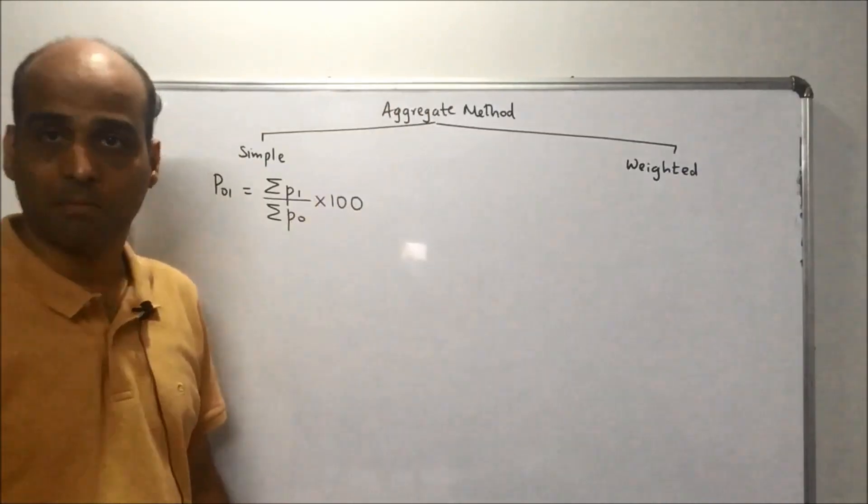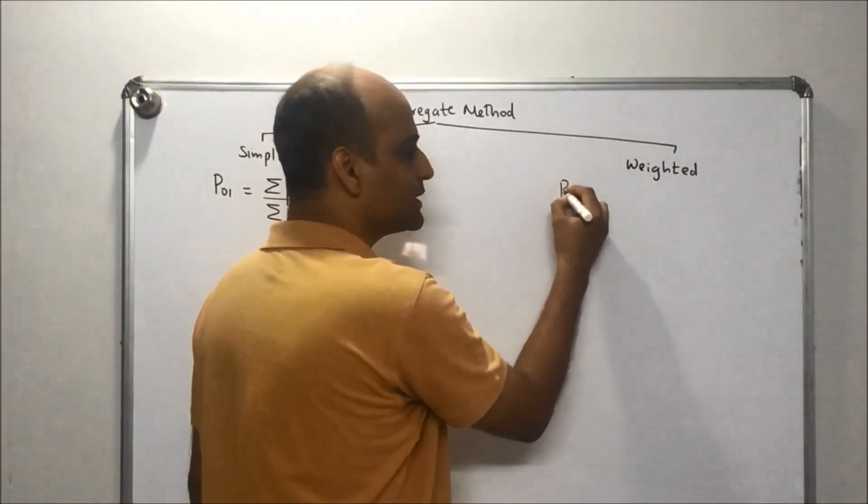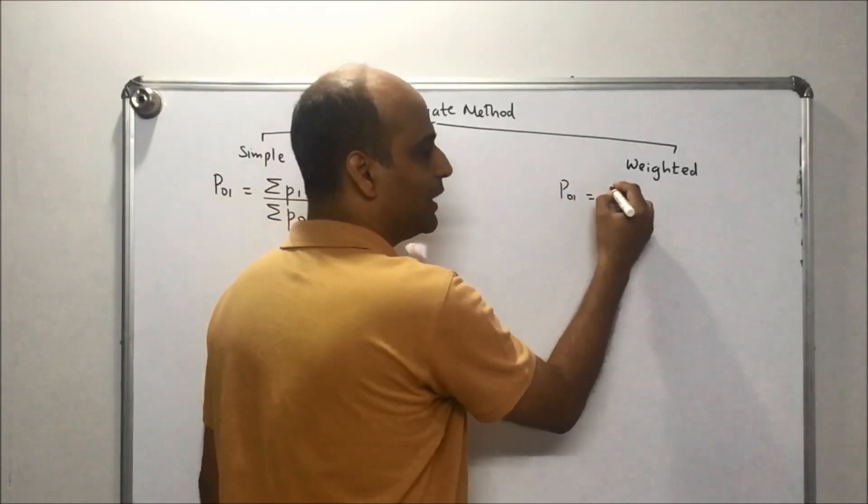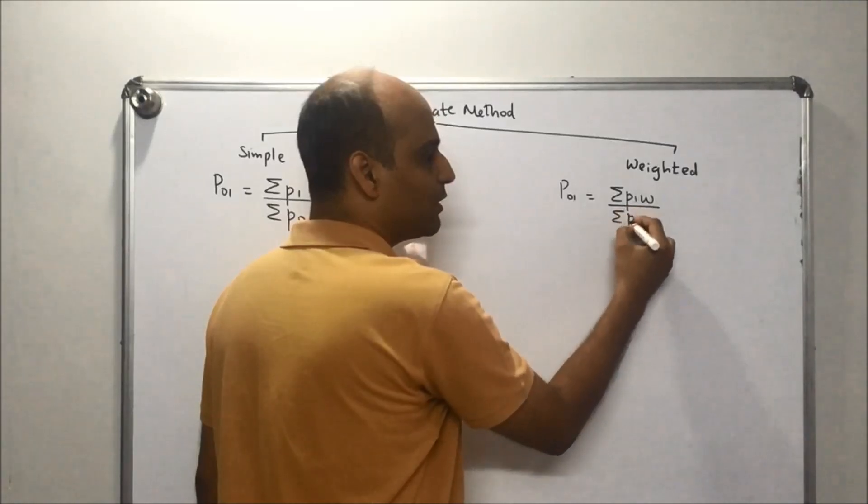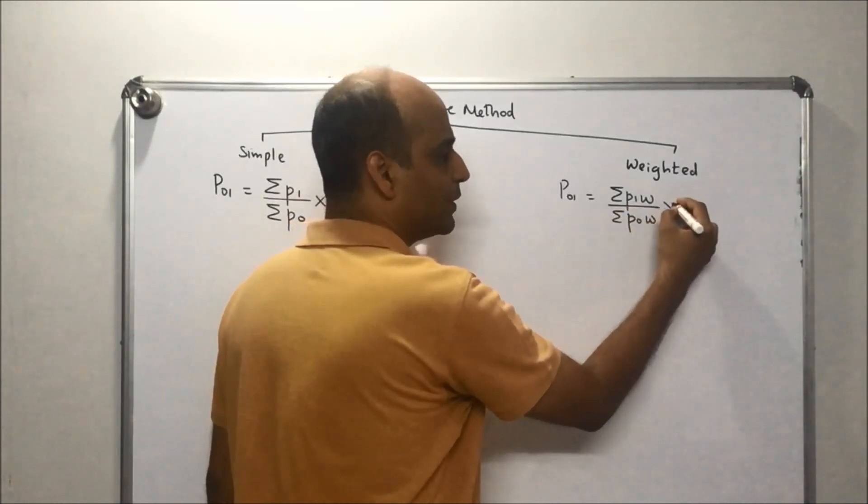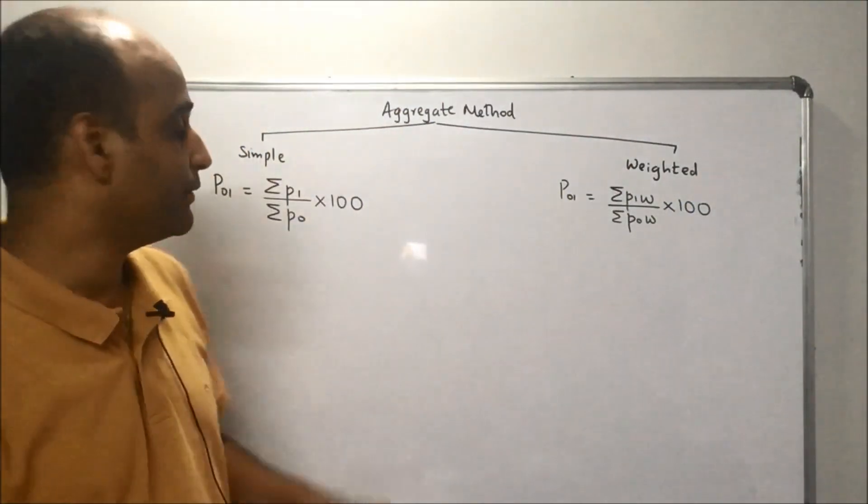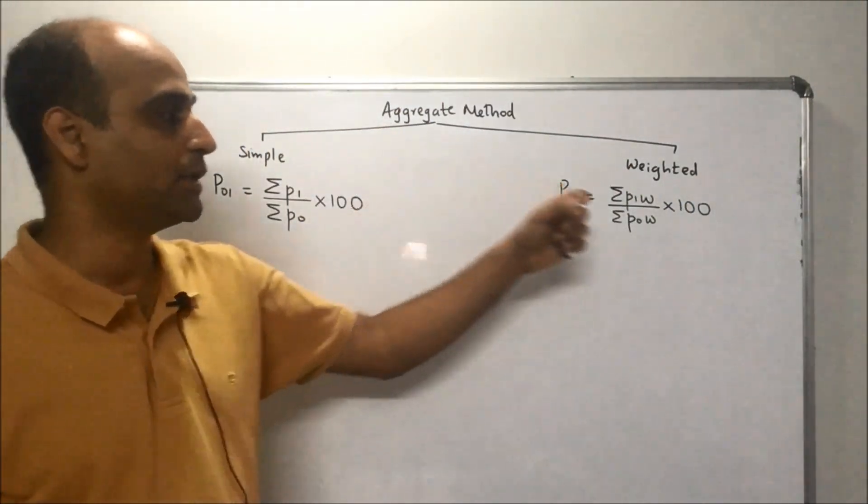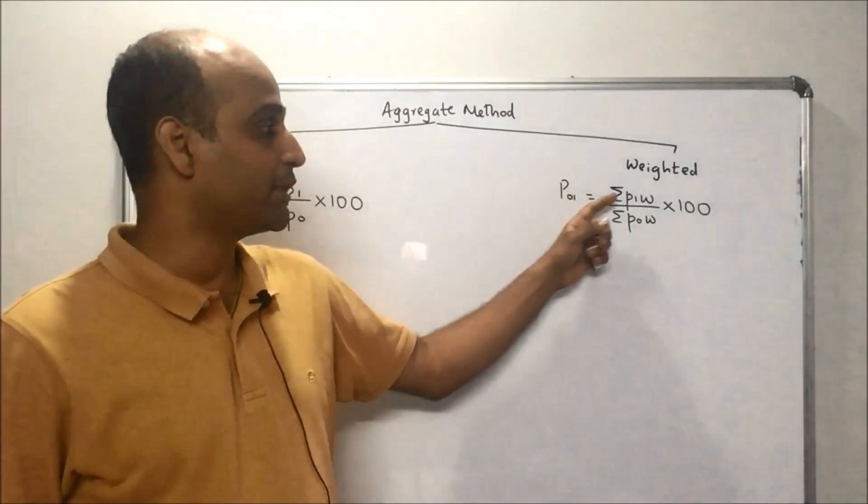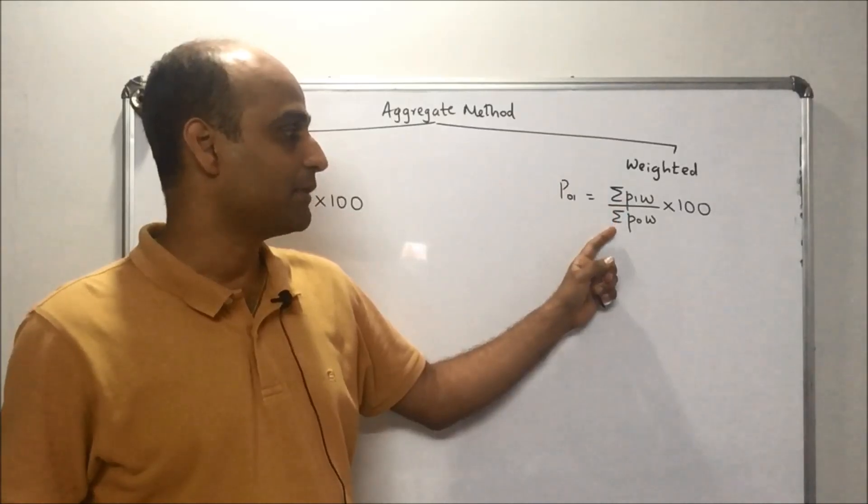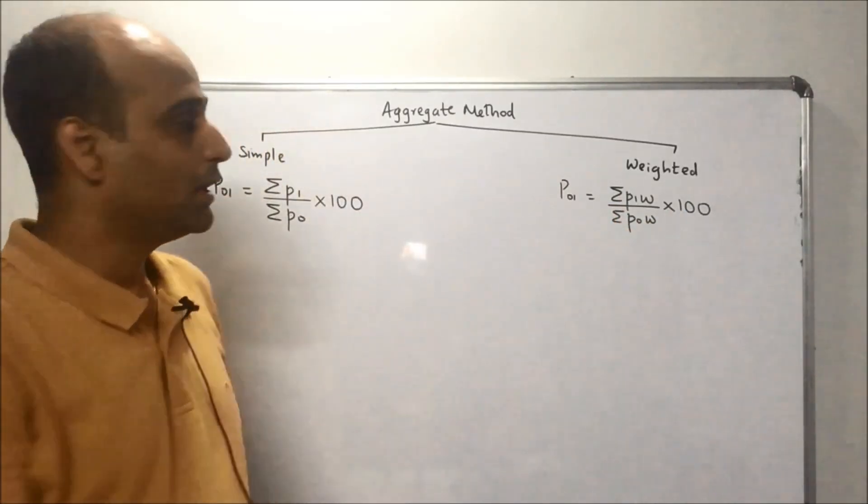Under weighted, the formula changes slightly. It is summation of P₁W upon summation of P₀W into 100, where W is the weightage. Here we don't use weights, whereas here we use weights. The general formula under weighted is summation P₁W upon summation P₀W into 100.